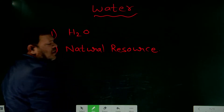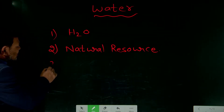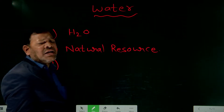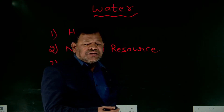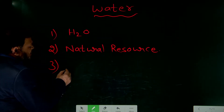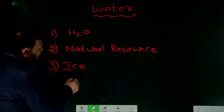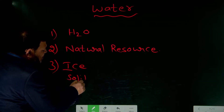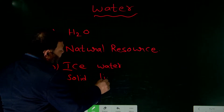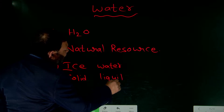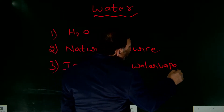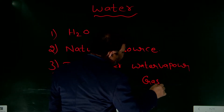If you see water, it is actually present in three states. The solid form is ice, the liquid form is drinking water, and the gaseous form is water vapor.